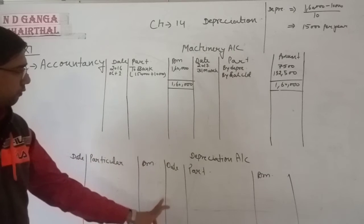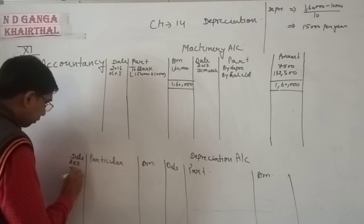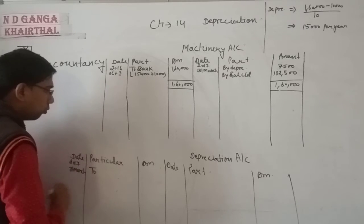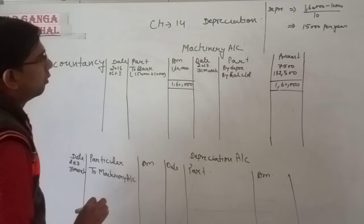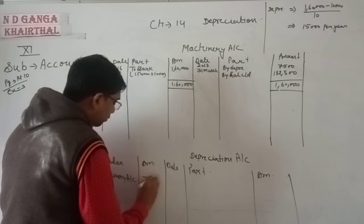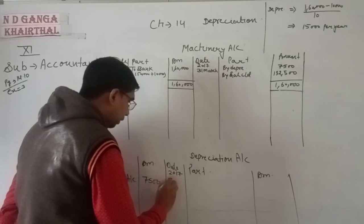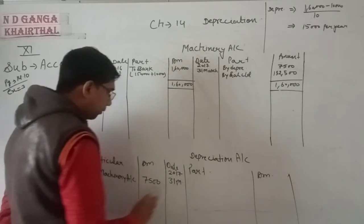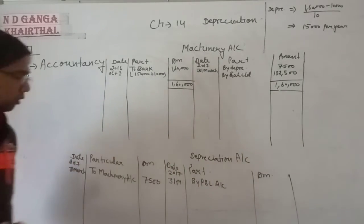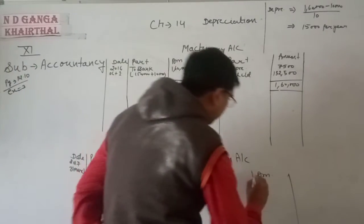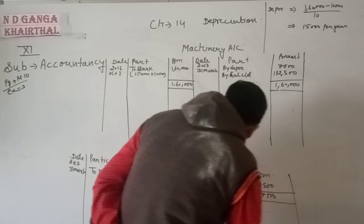The depreciation is then transferred to the depreciation account. On 31st March 2017, depreciation account is debited to machinery account: 7,500 rupees. At the end of the financial year, depreciation is transferred to profit and loss account: 7,500 rupees.